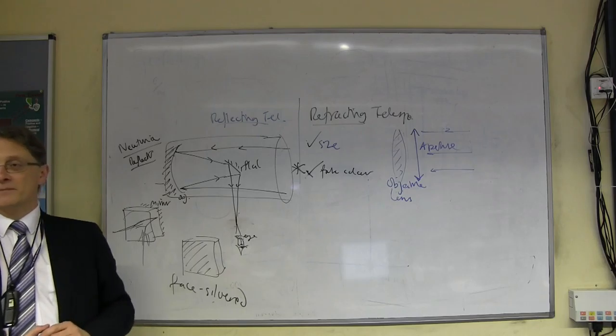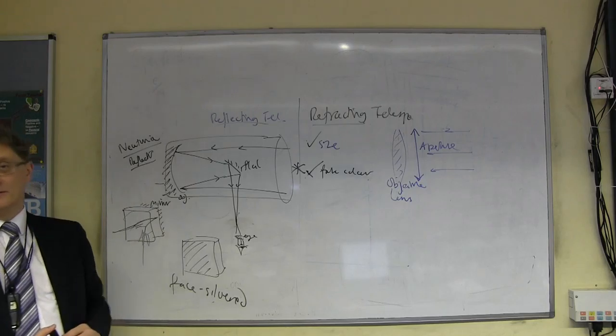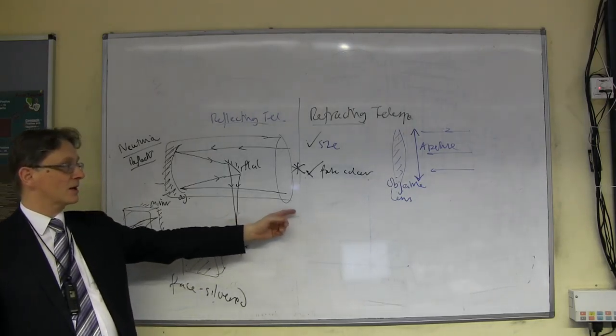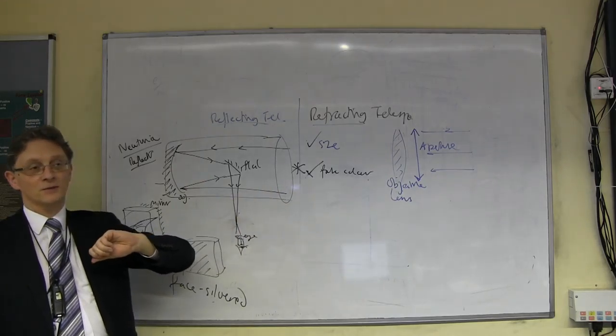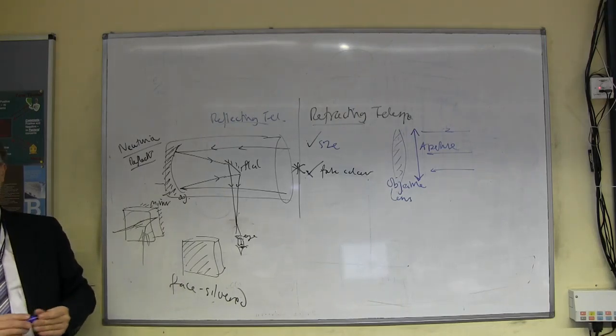You can make, quite cheaply, very big Newtonian reflectors. They're probably the best value for money. If you want to see a lot of things in the sky, for the smallest amount of money, the Newtonian reflector. However, they are quite tricky to use sometimes. They've got this problem. They've got the open tube, et cetera. So as far as you're concerned, that is the reflecting telescope.